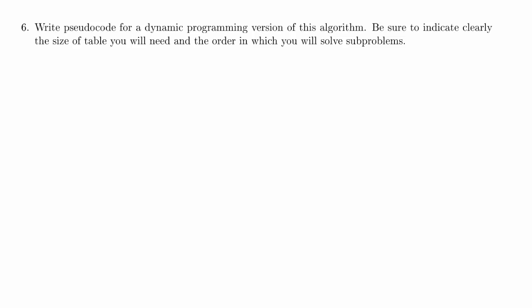We're working on problem 4.6 of the CS 320 2014 winter 2 final exam practice problems. This problem asks us to write pseudocode for a dynamic programming version of the algorithm, clearly indicating the size of the table we'll need and the order in which we'll solve subproblems. Dynamic programming is just a way to rearrange problems so that we never have to ask whether we've already solved a subproblem — every problem we solve will already have all its subproblems solved, which can be really useful.